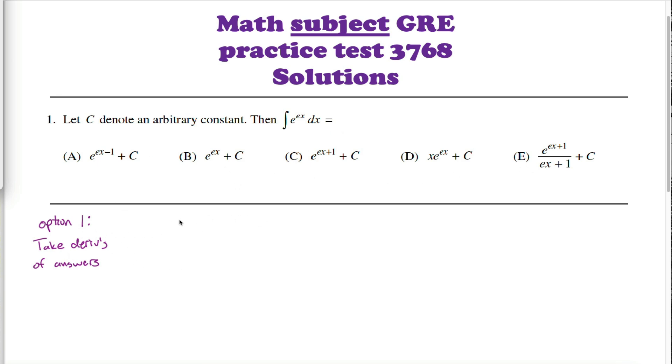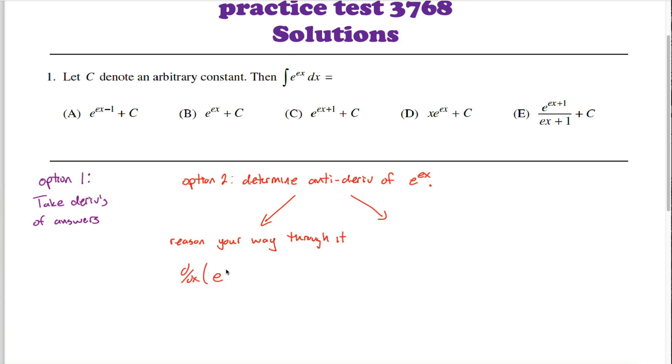I think what the test takers probably had in mind is to figure out the antiderivative of e to the ex power. If you just finished the calc 2 class, you might be able to reason that because the derivative of e raised to some constant times x is almost just e raised to that constant times x, but you have to remember to apply the chain rule. So we multiply by the derivative of a constant times x, which is just that constant.